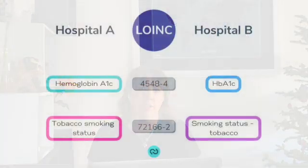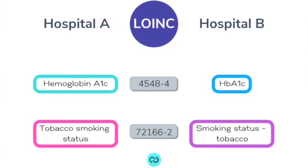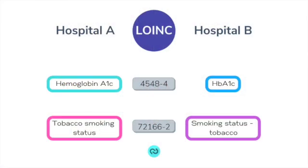Let's take a look at a couple of examples. Looking at LOINC code 4548-4, which is for hemoglobin A1C, organization A may have it labeled as 'hemoglobin A1C' in their system, while system B refers to it as 'HBA1C.' By connecting the 4548-4 LOINC code to both of those tests, the two systems can exchange data and understand they're referring to the same thing. Another example is tobacco smoking status — LOINC code 72166-2. System A may label it 'tobacco smoking status' and system B 'smoking status-tobacco,' but they're connected with that consistent LOINC code so that they have the same meaning.